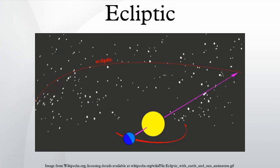If the equator is projected outward to the celestial sphere, forming the celestial equator, it crosses the ecliptic at two points known as the equinoxes.